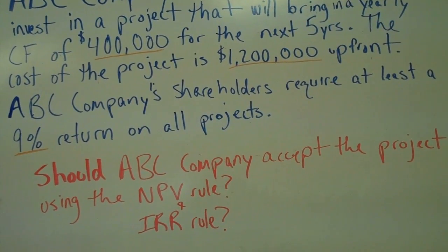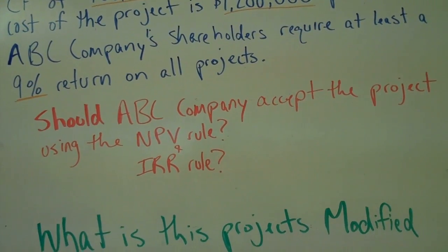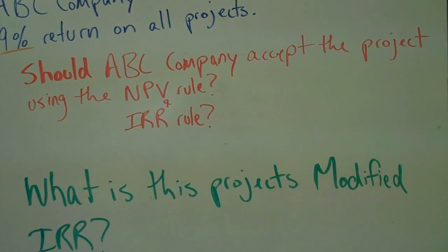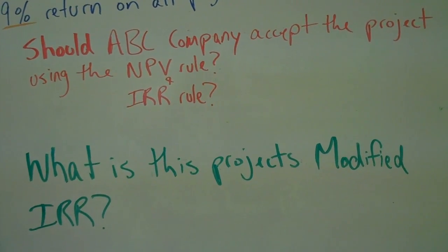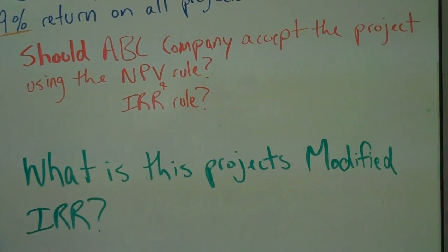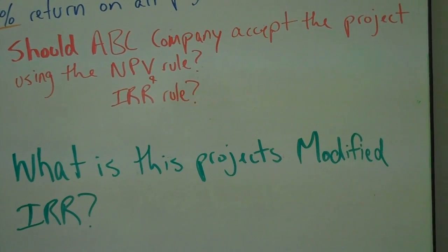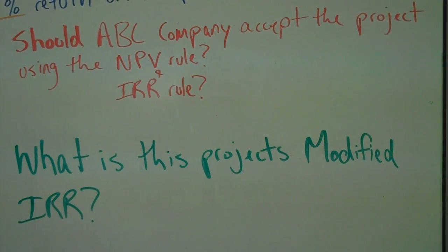ABC Company shareholders require at least a 9% return on all projects. So now we will act as financial planners, CFOs, etc. for ABC Company.